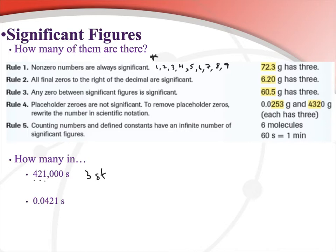For 0.0421: the 4, 2, and 1 count automatically. The zero to the right of the decimal is not a final or terminal zero — it doesn't end the number — so it doesn't count under rule two. There are no zeros between significant figures, so the first two zeros are just placeholders. Therefore 0.0421 also has only three significant figures.